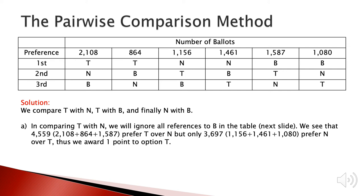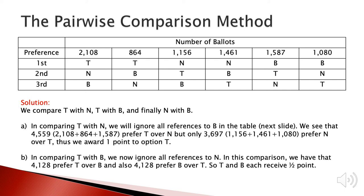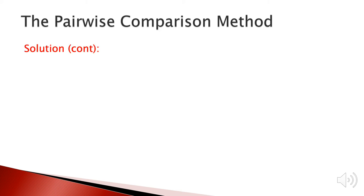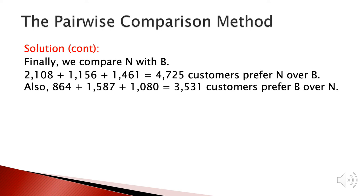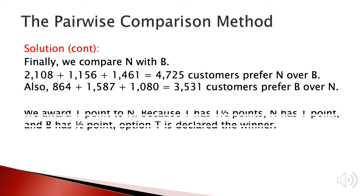Next, we compare T and B. After the comparison, there is a tie between T and B, so we give both T and B 0.5 points. Finally, we compare N and B, and more customers prefer N over B, so we give N one point. Now T has 1 + 0.5 = 1.5 points, N has 1 point, and B has 0.5 points. So in the pairwise comparison method, T is the winner.